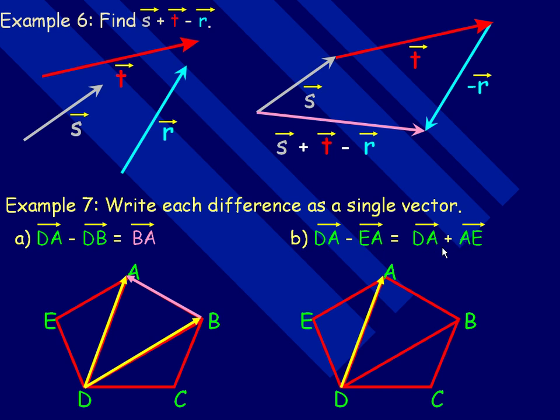Now notice that these vectors will be head to tail, because those two A's are both right there in the middle. And so I have my DA vector and I'm adding the AE vector. There's the AE vector. These vectors are head to tail. So that vector sum will go from the beginning of D to the end of the AE vector, which would be that orange vector right there, which is the DE vector. So DA plus AE equals DE. Or DA minus EA is equal to the DE vector.